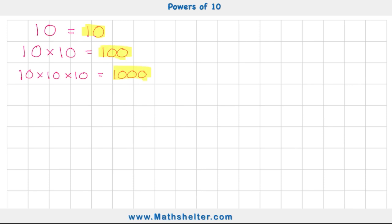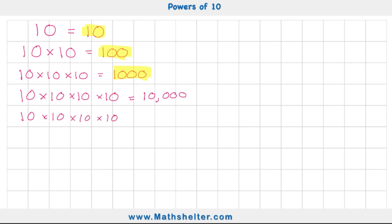Let's see if that pattern continues. My fourth example: 10 times 10 times 10 times 10 equals 10,000. And one more — 10 times 10 times 10 times 10 times 10 equals 100,000. So now we can start to see this pattern emerging in our standard form answers.